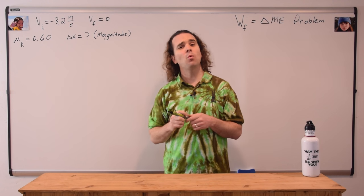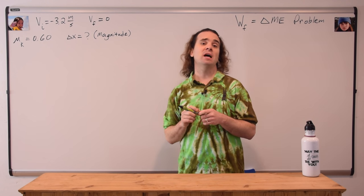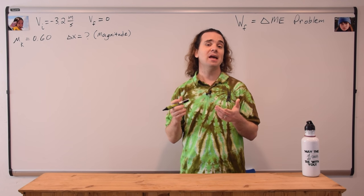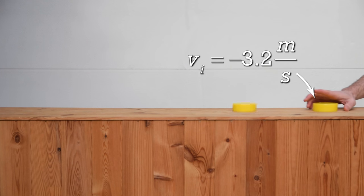Bobby, why is the initial velocity of the puck negative? Because the puck is moving to the left. Yes, the initial velocity is negative because the puck is moving to the left.